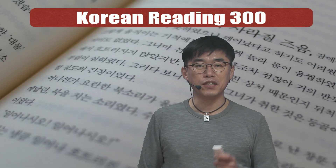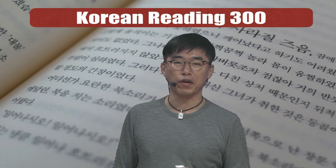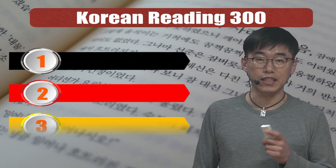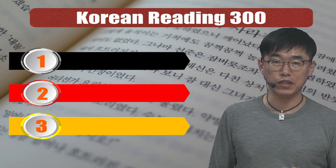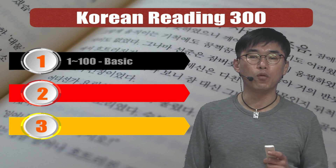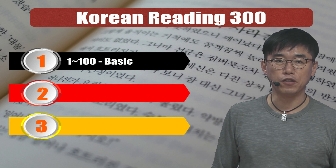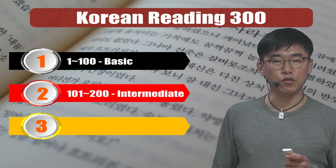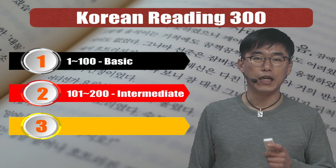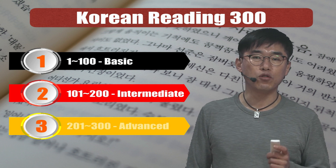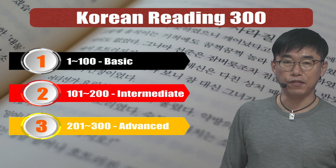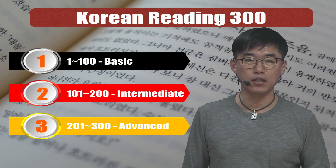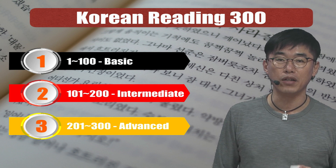Hi everyone, this is the first lecture of Korean Reading 300. There are three segments in Korean Reading 300. Each segment has 100 lectures respectively. From number 1 to number 100, the paragraphs will consist of basic forms of easy and short sentences. Number 101 to 200 will be intermediate course and number 201 to 300 will be advanced level. I will upload the videos consecutively at each segment so that you can watch videos at your own level.